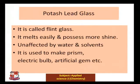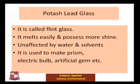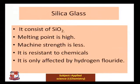Potash lead glass, also called flint glass, melts easily, possesses more shine, and is unaffected by water and solvents. It is used to make prisms, electric bulbs, artificial gems, etc.